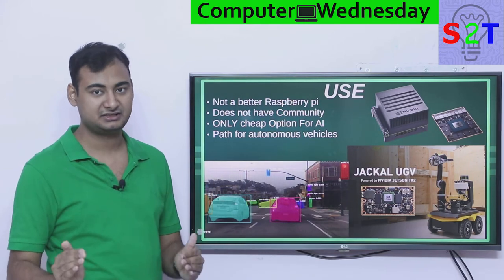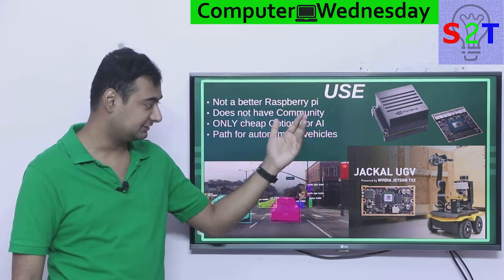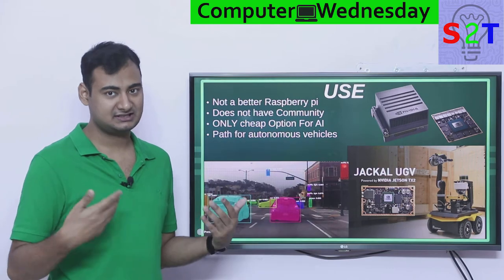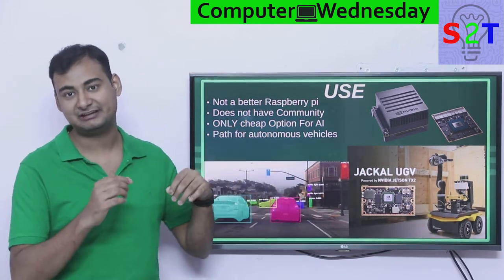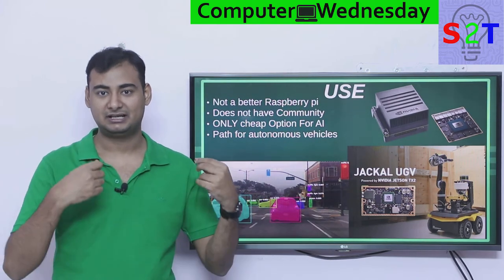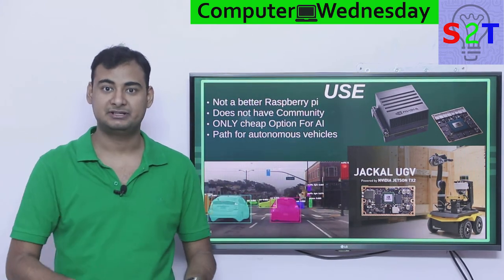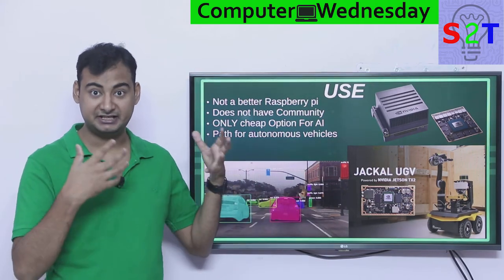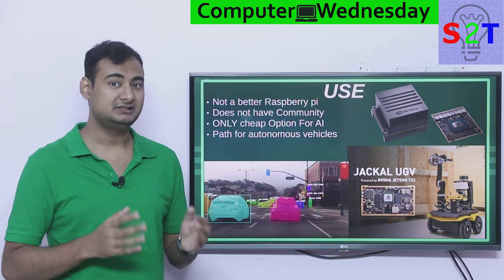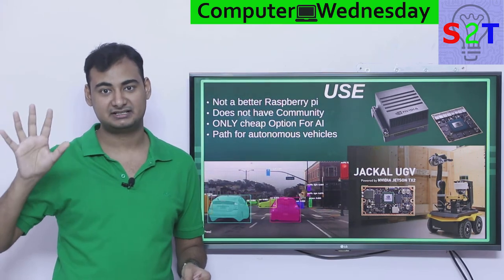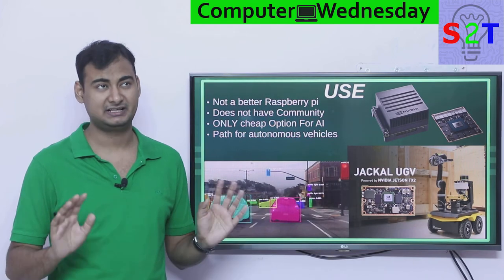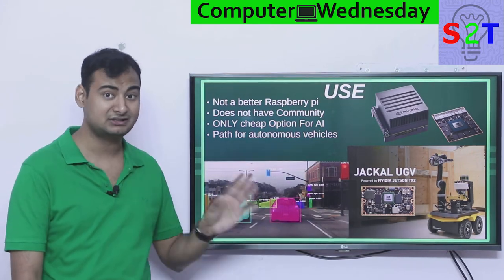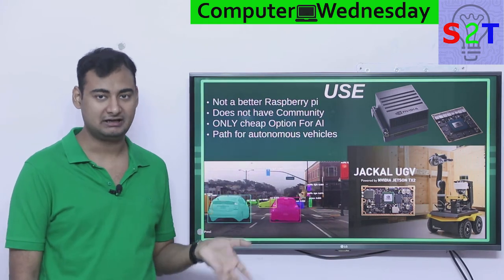So let's talk about the uses. The biggest warning anyone will give you: this is not a better Raspberry Pi. If you want a better Raspberry Pi, this is not it. Can you use it as a computer? Yes. But it does not have the same community. If you have a GPIO pin header issue — like adding a real-time clock — the drivers or compiler may not work. Of course there is a community, and Nvidia is investing in good developer tools, but compared to Raspberry Pi's perhaps 10 million users, this barely has one million.